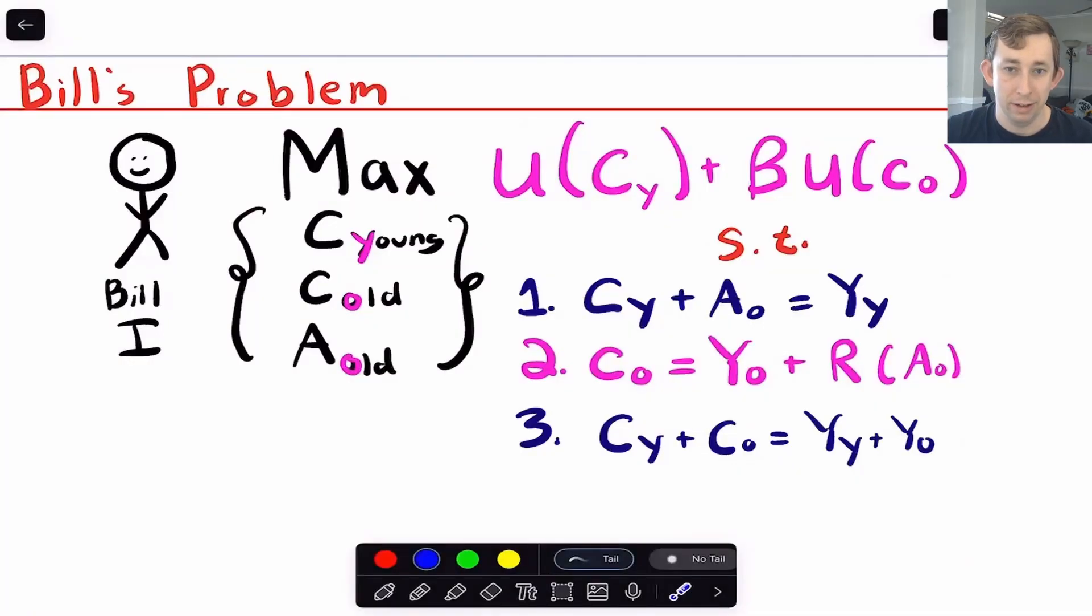So now that we know why it's called the overlapping generations model, let's return to Bill and think about Bill's problem over the course of his two period life. Well, when Bill I or the original Bill is alive, he is choosing how much he consumes when he's young, when he's old. And he also gets to choose how much he wants to save when he's young for when he's old. So this is like how much he wants to put in his retirement account when he's young to have available when he's old. And so his utility is just a two period utility will have this present discount factor beta. And so really, it's just U of C_Y or the utility when he's young, plus beta times the utility when he's old, because Bill is making these decisions when he's young.